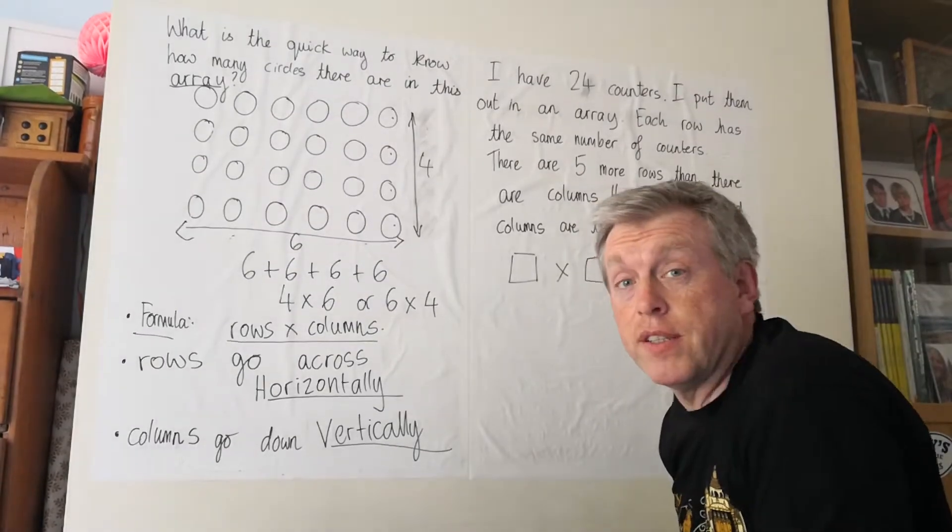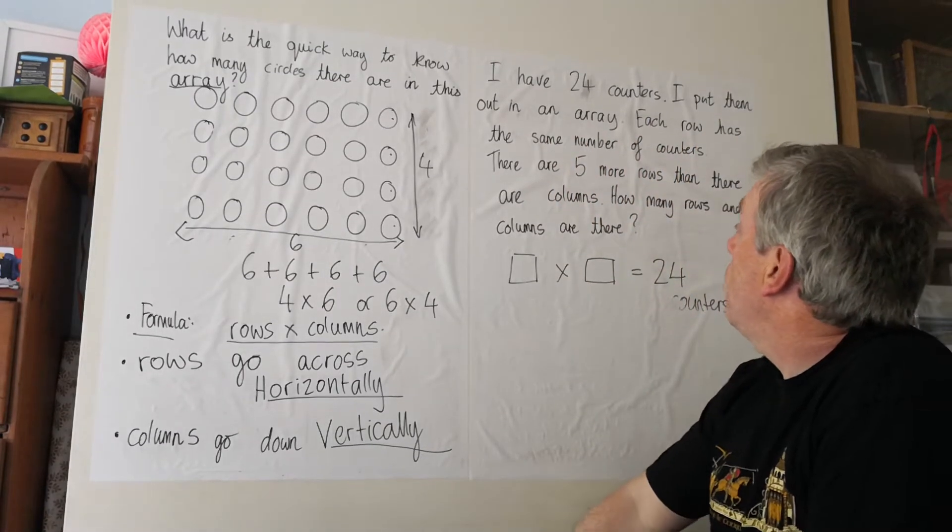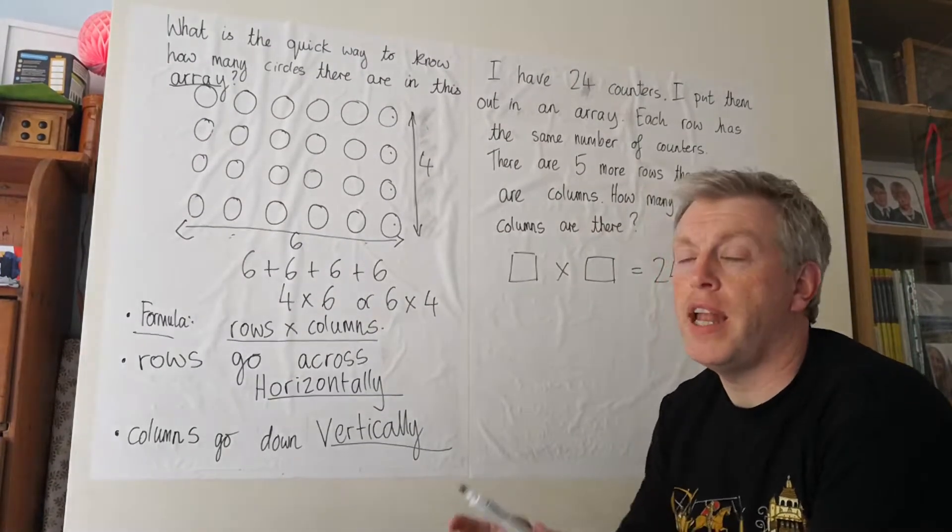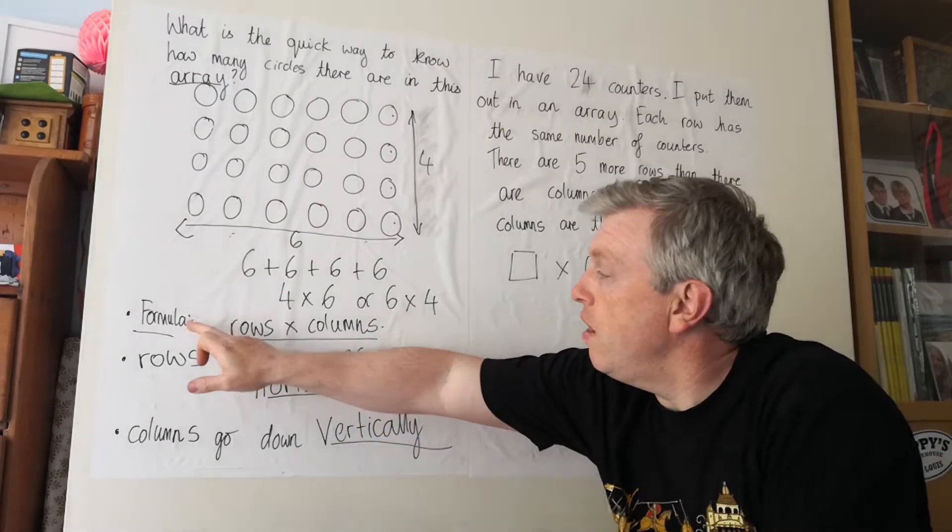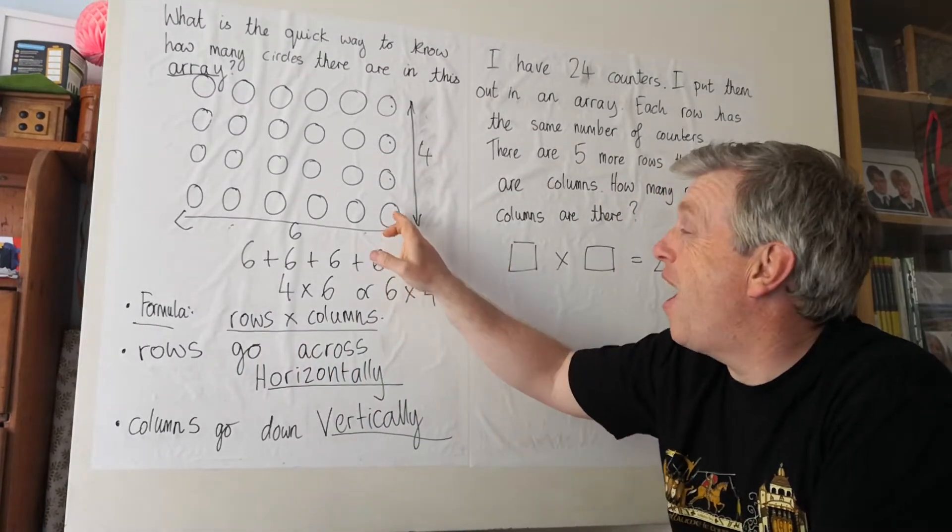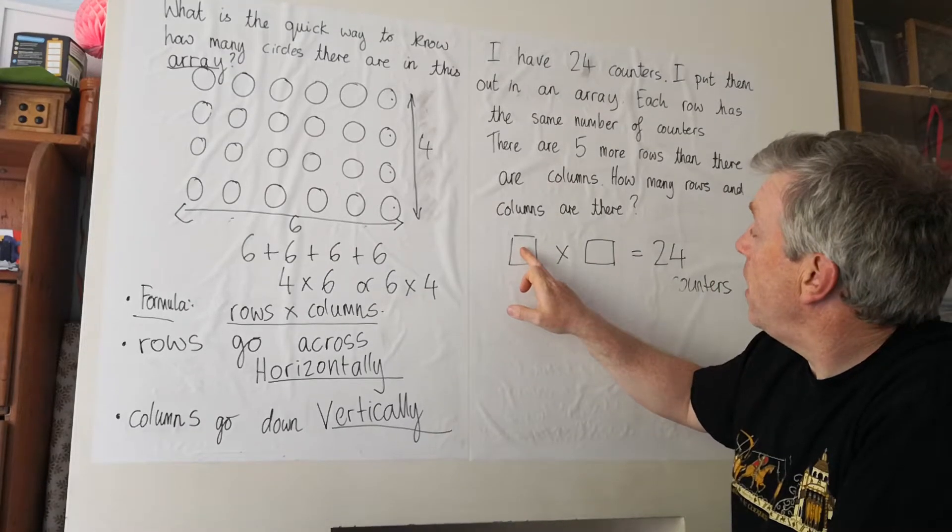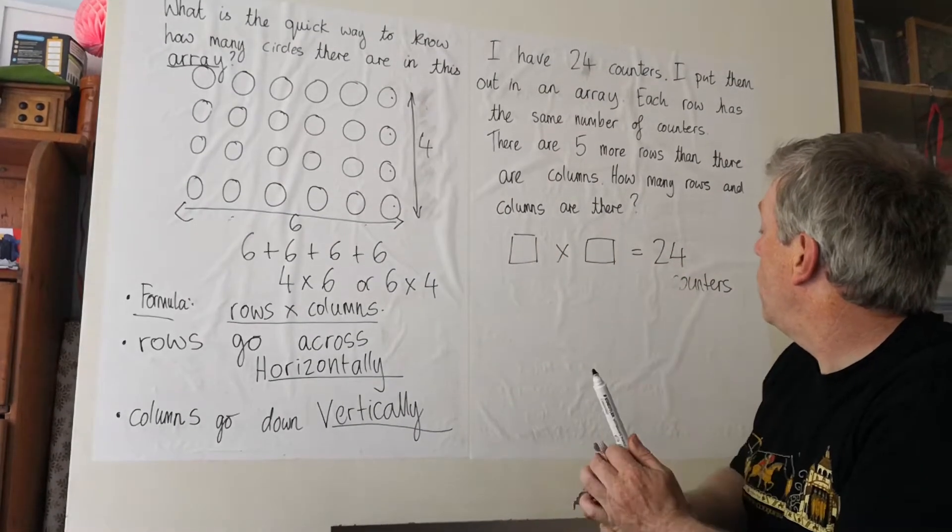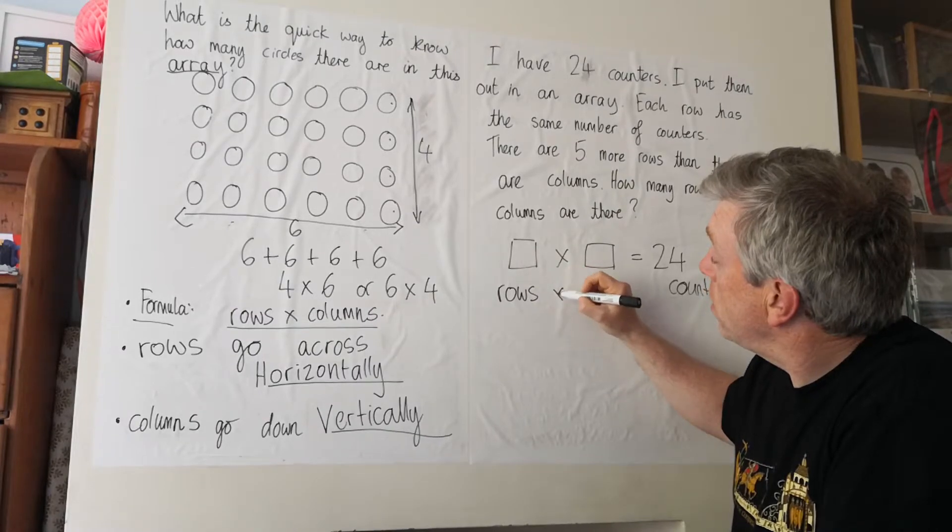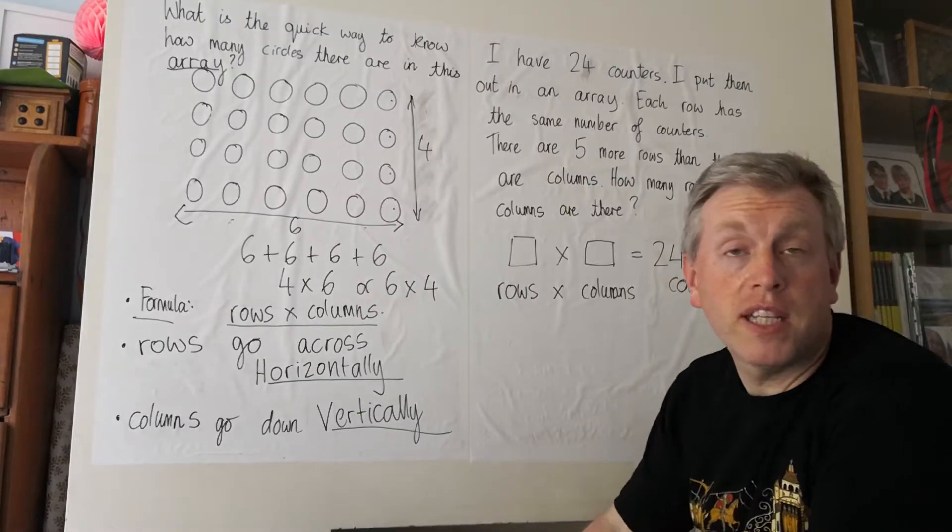I have 24 counters. I put them out in an array. Each row has the same number of counters. There are five more rows than there are columns. How many rows and columns are there? Now, remember what we said about an array. The formula for an array is the number of rows times the number of columns tells us how many things there are in the whole array. So, here it's something times something equals 24.